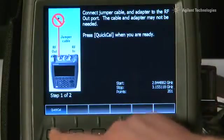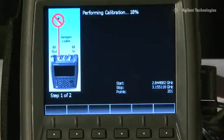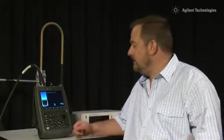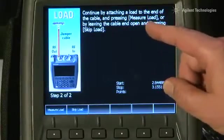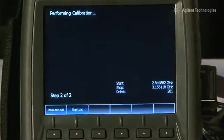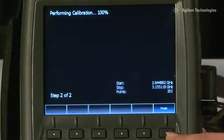I will press that, and it is now performing the calibration. It is just using the open circuit end of the cable. It does not require any specific standards. We do have the option of connecting a 50 ohm load if we want a better quality Cal, but we do not need that in this instance. I will press Skip Load, and then Finish.